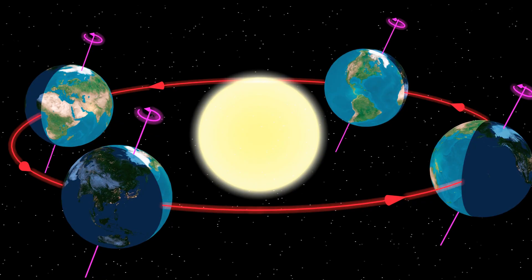It's very important to understand where the Earth is going to be in relation to the sun when talking about the seasons. At position one, the North Pole is completely illuminated and tilted towards the sun — that's Northern Hemisphere summertime. At position two, the North Pole is tilted away from the sun and in complete darkness — that's Northern Hemisphere winter. Going counterclockwise, position three is spring and position four is fall. Spring and fall are equinoxes and have equal characteristics, so you must identify summer and winter first. The Southern Hemisphere is exactly opposite: position one is Southern Hemisphere winter, position two is Southern Hemisphere summer, position three is Southern Hemisphere fall, and position four is Southern Hemisphere spring.